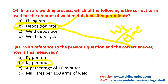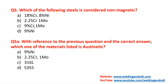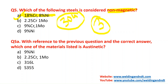Question number five: which of the following steels is considered non-magnetic? Non-magnetic steels are mostly austenitic stainless steels. Austenitic stainless steels are named with specifications starting with 3, like 304 and 316. In the options, 18% chromium and 8% nickel is a form of austenitic stainless steel — this is essentially SS304. So SS304 is austenitic stainless steel, it is non-magnetic, and the answer is option A.